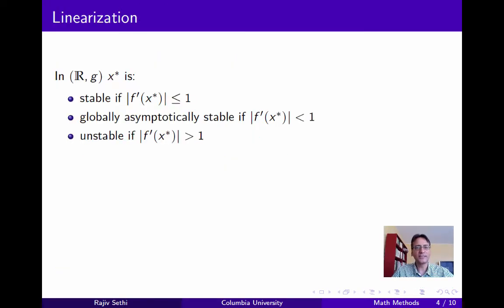Now the properties of x-star in the linear system are well understood, and we've dealt with these already. In this system, x-star is Lyapunov stable if the slope of the function f at x-star is less than or equal to 1, it's globally asymptotically stable if it's strictly less than 1, and it's unstable if it's greater than 1.